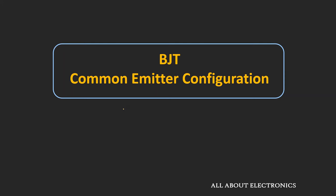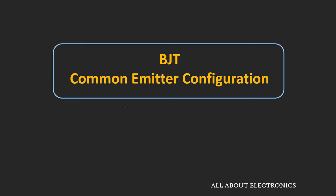Hey friends, welcome to the YouTube channel All About Electronics. In this video, we will learn about the common emitter configuration of the BJT. This common emitter configuration is the most frequently used configuration of the BJT, and in fact, for most of the time when the BJT is used as an amplifier, it is used in this configuration.